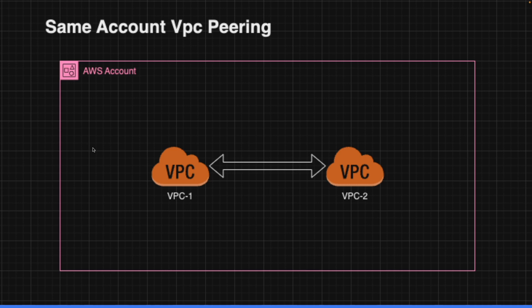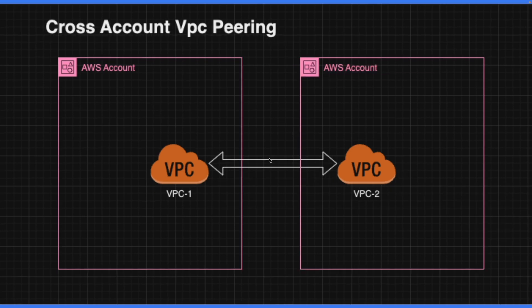This is straightforward in the same account, but the real problem comes when we have two separate accounts. Both VPCs are in separate AWS accounts — account 1 and account 2. It becomes tricky because we are providing credentials for each account separately. You can initiate VPC peering from one account, but the same credentials cannot be used to accept it from the other account.